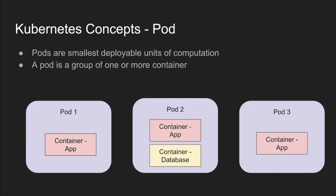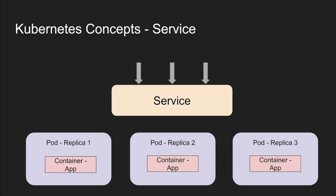A pod is the smallest deployable unit of computation in Kubernetes — it's a group of one or more containers. Whenever we use containers in Kubernetes we need to use this pod wrapper. A container can be deployed independent of Kubernetes, but a pod is specific to Kubernetes. For example, pod one might have just one container, while pod two might have two containers — one with the application and another with a database.